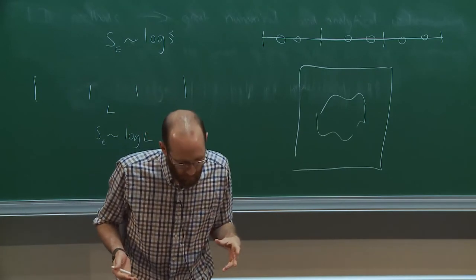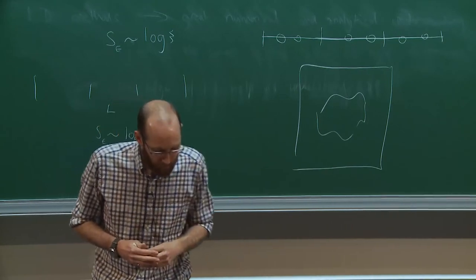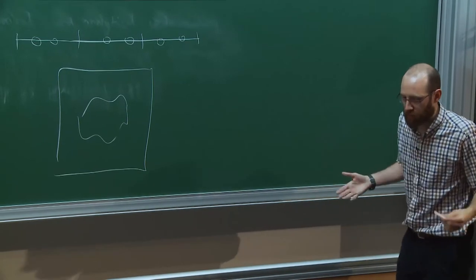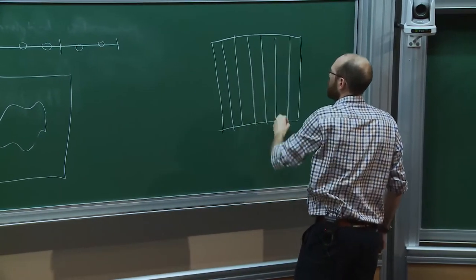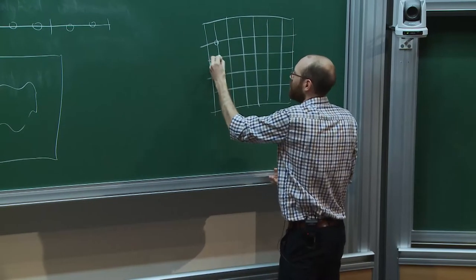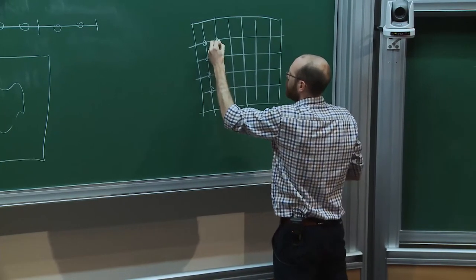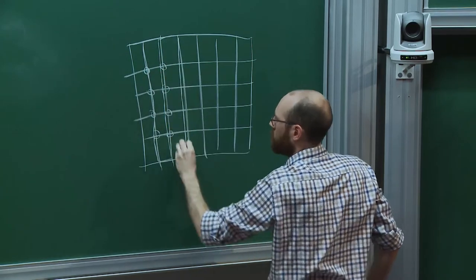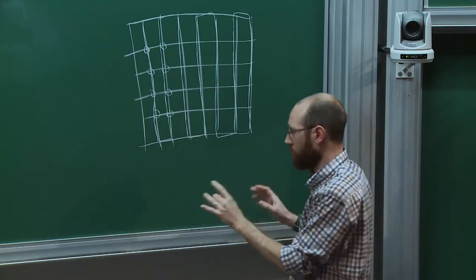Philippe and Didier were telling us about PEPS, which is explicitly constructed to capture the area law and does very well for 2D systems. However it has very complicated algorithms and quite a large computational overhead, and it doesn't use our pre-existing knowledge of 1D. There's also the approach of taking matrix product states themselves and trying to make a 2D system like a 1D system by forming a snaking path — mapping your 2D system back to 1D by going through the system in a snake-like pattern.